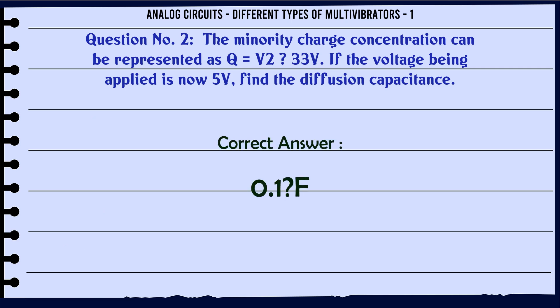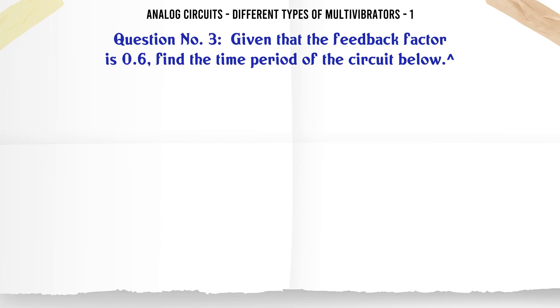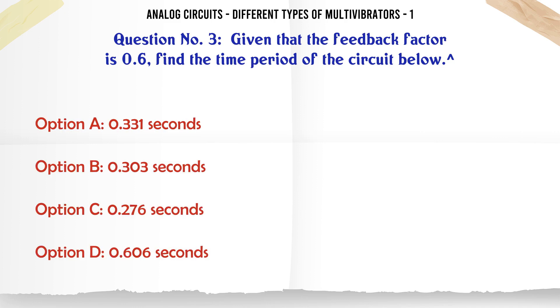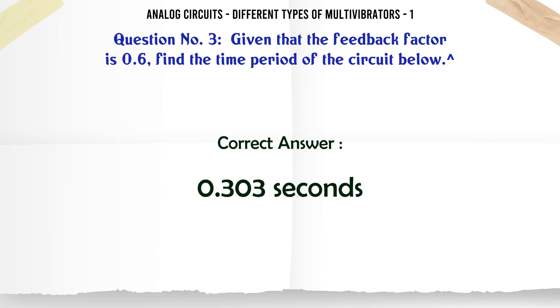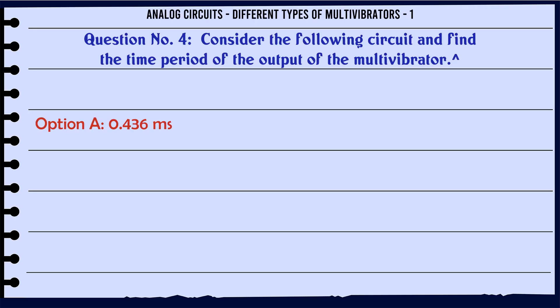The correct answer is 0.1 F. Given that the feedback factor is 0.6, find the time period of the circuit. A: 0.331 seconds. B: 0.303 seconds. C: 0.276 seconds. D: 0.606 seconds. The correct answer is 0.303 seconds.